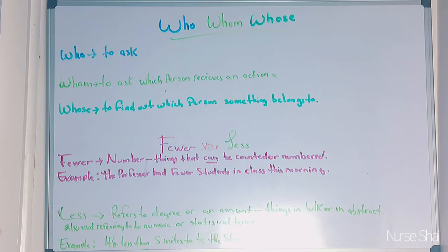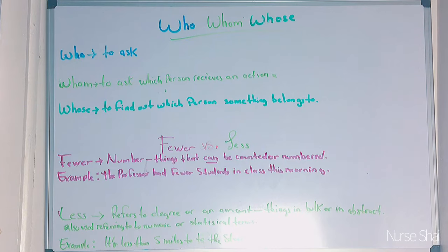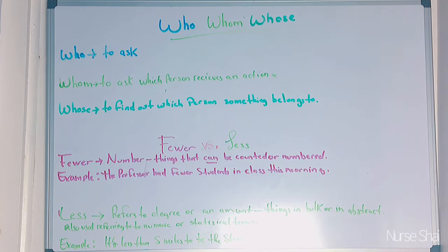Fewer versus less: fewer refers to the number of things that can be counted — 'The professor had fewer students in his class this morning.' Less refers to the degree or amount that is in bulk or abstract, also used in math and statistics — 'It's less than five miles to the store.'